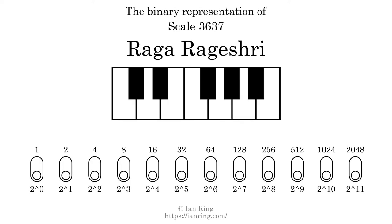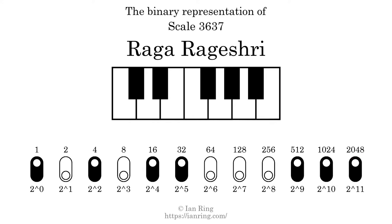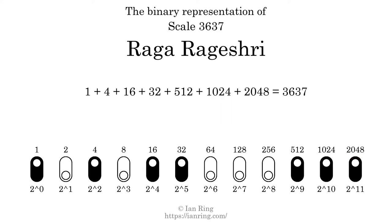The binary representation of this scale is determined by mapping tones of the scale to binary digits. Each binary digit represents a power of 2. To get the scale number, we add the powers of 2 together. The powers of 2 that are present in the scale, all added together, equals 3637. That is why the scale number, in decimal, is 3637.